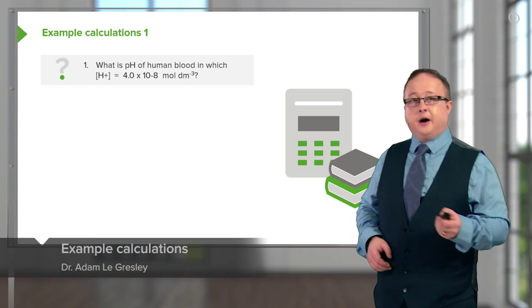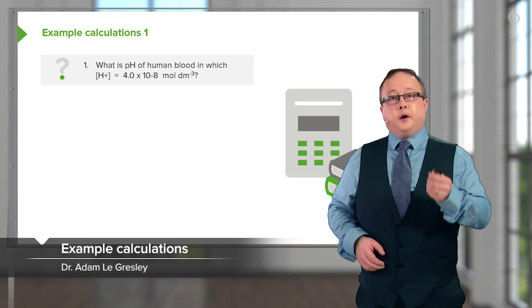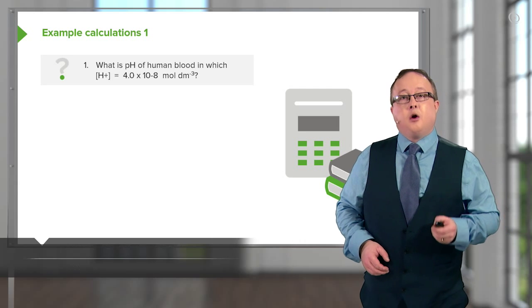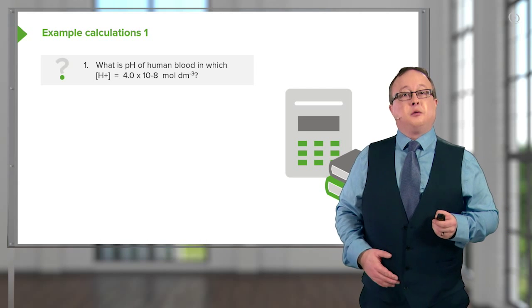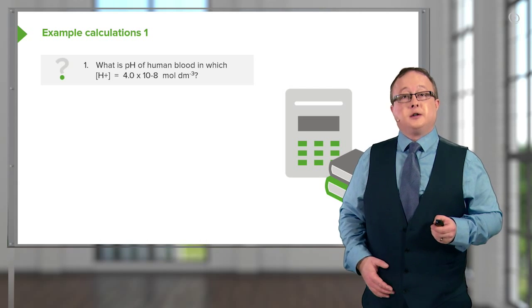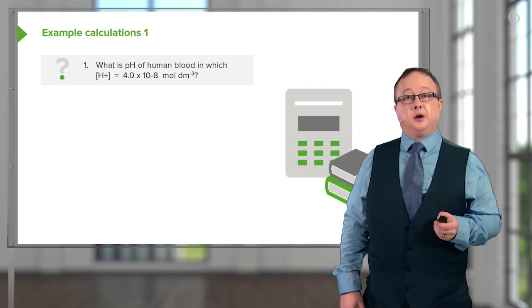So let's have a look at some example calculations. What is the pH of human blood when H plus is equal to 4.0 times 10 to the minus 8 moles per decimeter cubed?